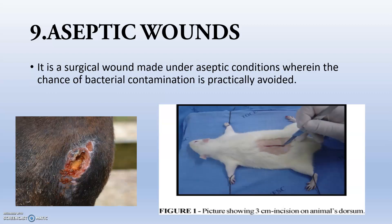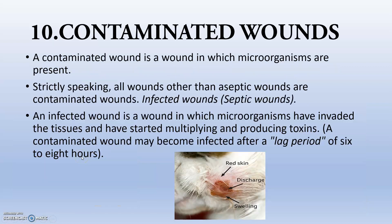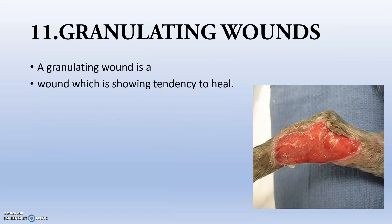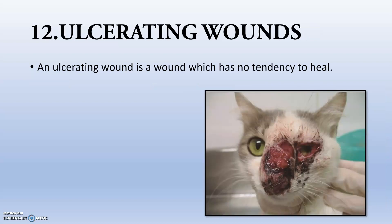An aseptic wound is a surgical wound made under aseptic conditions where contamination is practically avoided. A septic wound has bacterial infiltration and will begin forming pus. Contaminated wounds are those in which microorganisms are present, also known as infected or septic wounds. When bacteria invade and multiply, they produce toxins that act on the wound, causing discharge and pus collection. A contaminated wound will become an infected and septic wound after six to eight hours. A granulating wound is one showing a tendency to heal, while an ulcerating wound shows no tendency to heal.